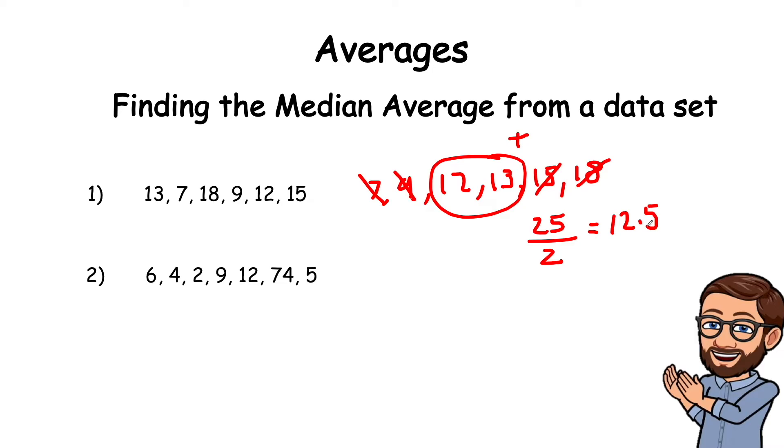Let's have a look at this other set now. Let's get these in order. So the lowest one is 2, 4, 5, 6, 9, 12, and 74.